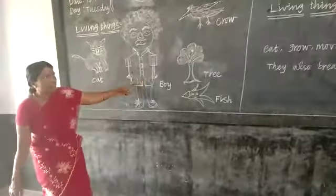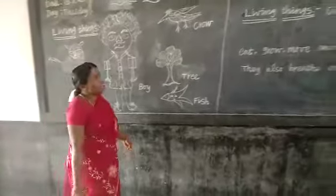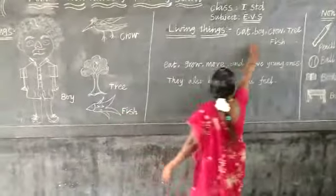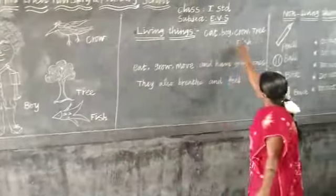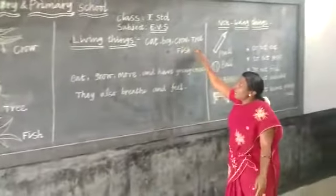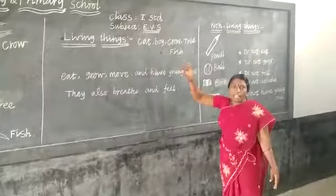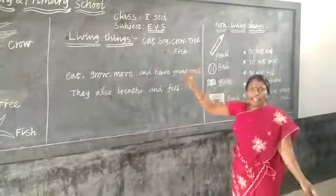Example, listen: cat, boy, crow, tree, fish, etc. These are examples of living things.